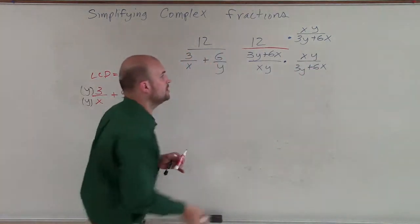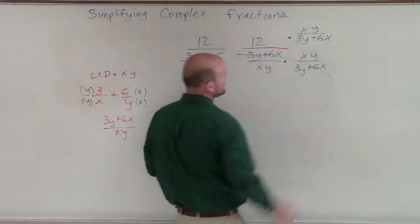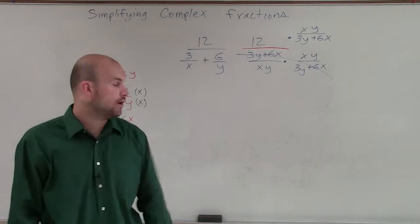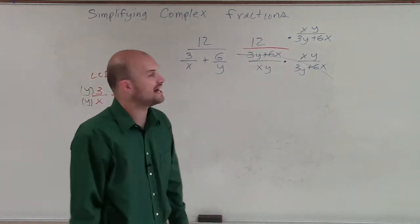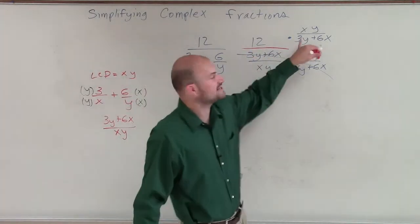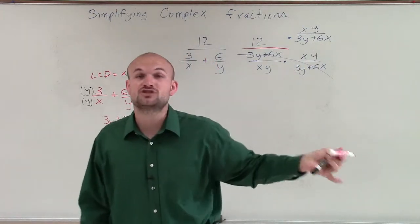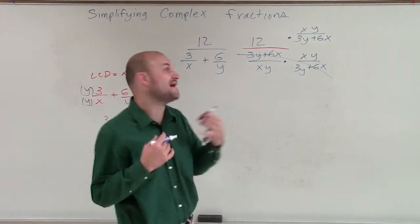OK, so we know that any fraction multiplied by its reciprocal is going to multiply to 1. Now I have 12 times xy divided by 3y plus 6x. And I notice that the 3y plus 6x, they'll share a common term of 3. So I can factor that out.